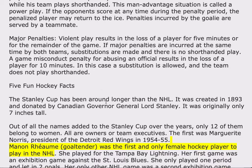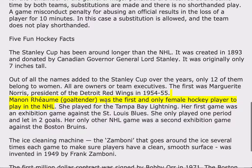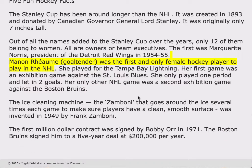Manon Rheaume, goaltender, was the first and only female hockey player to play in the NHL. She played for the Tampa Bay Lightning. Her first game was an exhibition game against the St. Louis Blues. She only played one period and let in two goals. Her only other NHL game was a second exhibition game against the Boston Bruins.